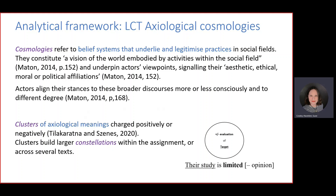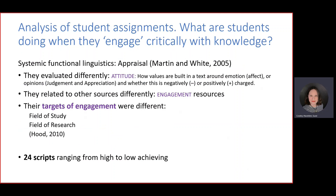I used legitimation code theory — axiological cosmology. You have some of Maton's definitions up there: belief systems that underlie and legitimize practices, which end up in actors' viewpoints, signaling their aesthetic, ethical, moral, and political affiliations. This work has been developed by Tila Karatna and others. In a paper in INJIB they go to the smallest unit of those axiological meanings, which they call a cluster: an ideational meaning plus a target and an evaluation. When these occur several times over the same or multiple texts, it becomes a constellation, and at a larger scale, a cosmology.